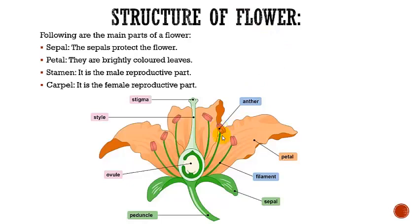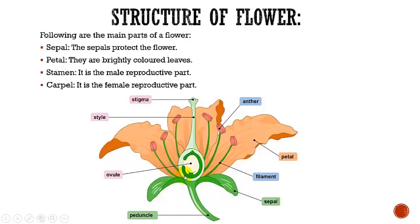Now, in the center of the flower is the carpel. The carpel is the female reproductive part of the flower. The carpel has a sticky tip called the stigma. This is the stigma. A thin neck called the style, and the lower part is the ovary, which contains the ovules. These ovules contain the female cell. So these are the main parts of a flower.